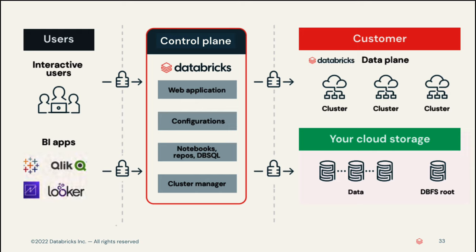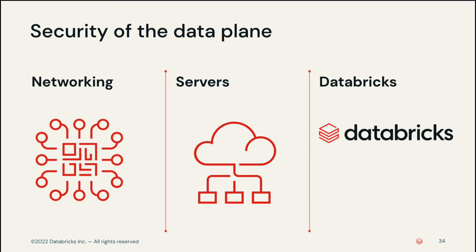The data plane is where your data is processed. Unless you choose to use serverless compute, the compute resources in the data plane run inside the business owner's own cloud account, and all the data stays where it is. While some data such as notebooks, configurations, logs, and user information are available in the control plane, the information is encrypted at rest, and communication to and from the control plane is encrypted in transit. For the networking of the environment, if the business decides to host the data plane, Databricks will configure the networking by default. The serverless data plane networking infrastructure is managed by Databricks and shared among customers with additional network boundaries between workspaces and clusters.